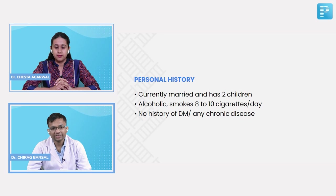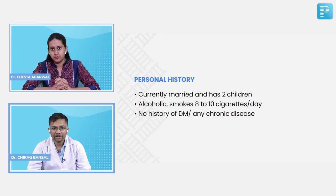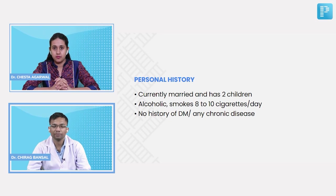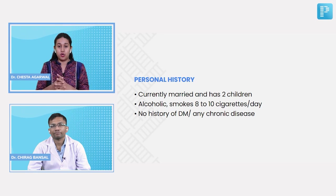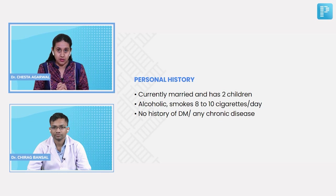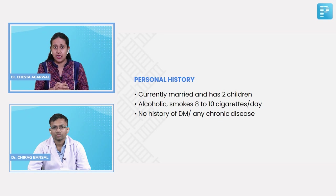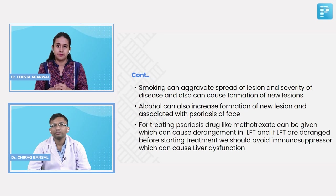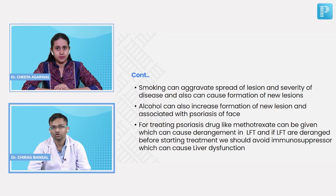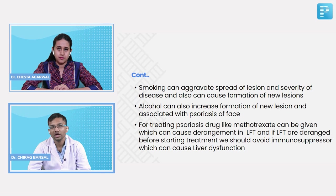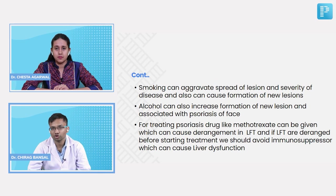Personal history: the patient is currently married with two children, is alcoholic, and smokes 8 to 10 cigarettes per day, with no history of diabetes mellitus. Is there any significance of alcohol or smoking history in a case of psoriasis? Smoking aggravates psoriatic lesions and can cause formation of new lesions. Alcohol is associated with increased psoriatic lesion formation and is particularly associated with facial psoriatic lesions.